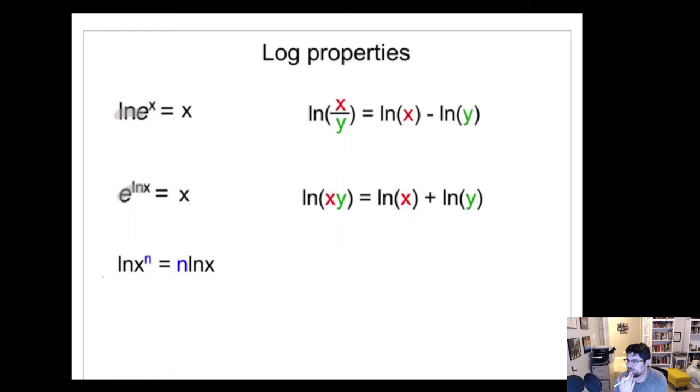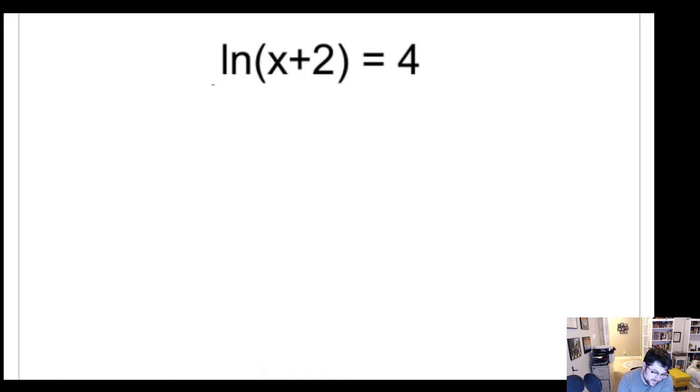So solving a problem like this one, what we would do is we would raise both sides to the power of e because e and natural log cancel. Or the exponent e and natural log cancel. Natural log being log with the base of e. So what we're left with is x plus 2 equals e to the 4th. And then we'd solve this by just subtracting 2. We would get x equals e to the 4th minus 2. And that's it.